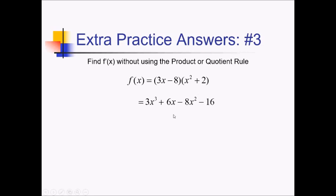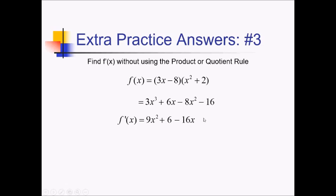So going through and just taking each of these derivatives — I'm not going to bother putting it in decreasing order of exponents — we've got 9x squared plus 6, just using the power rule here. And then finally minus 16x. This negative 16 here just becomes 0 because it's a constant.